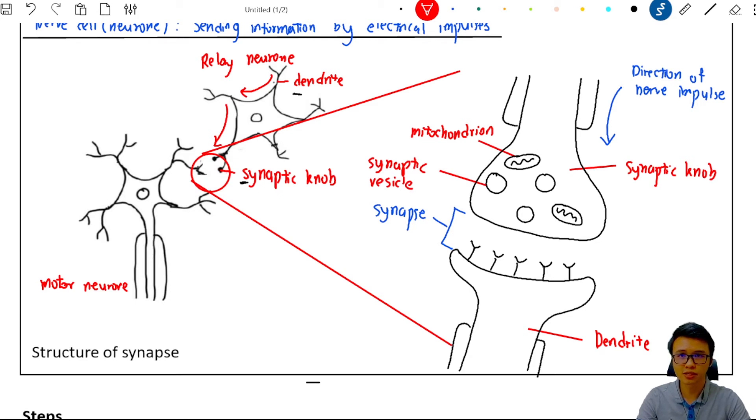So what is inside the synaptic vesicle? Inside the synaptic vesicle, we have a lot of neurotransmitter, a chemical that is going to be sent across the synapse. So remember, this neurotransmitter is a chemical substance.